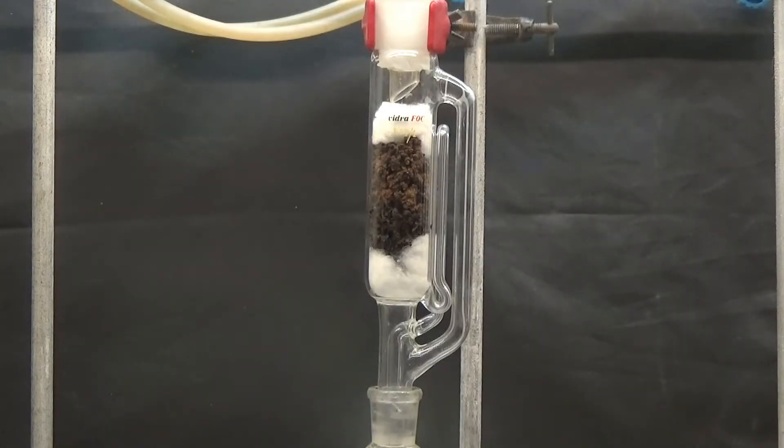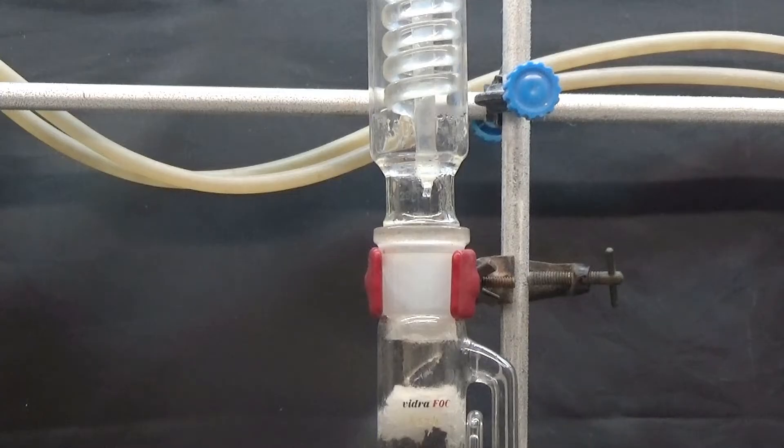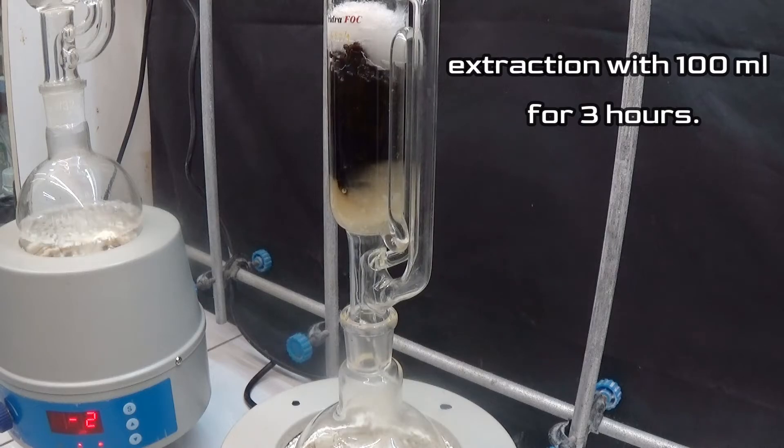The residue from the filter funnel and capsule is put into a Soxhlet extractor. The solid has been subjected to extraction with 100 milliliters of toluene for 3 hours.